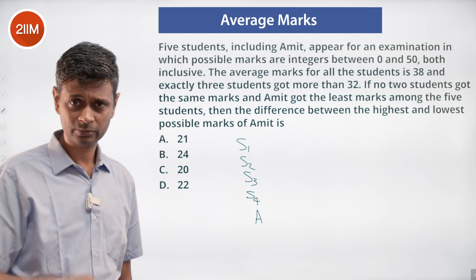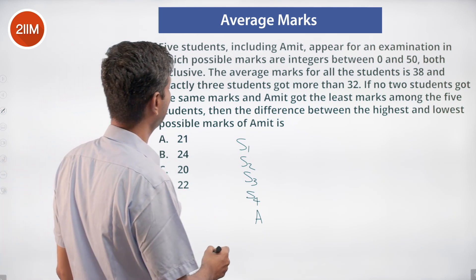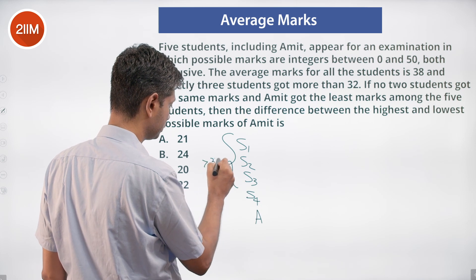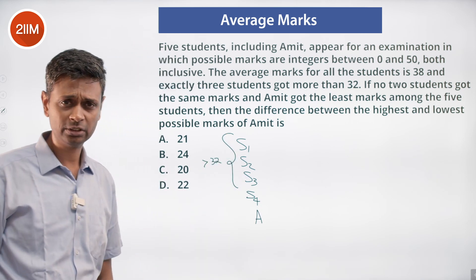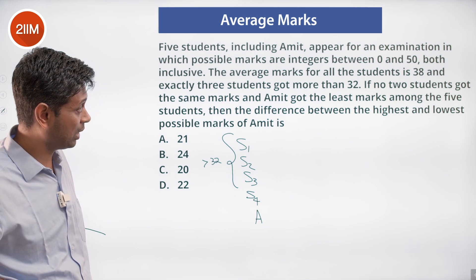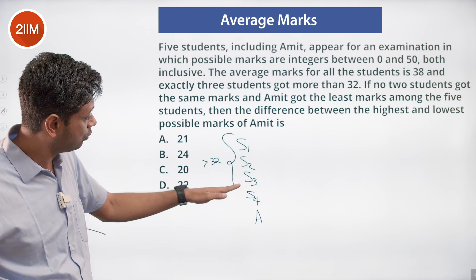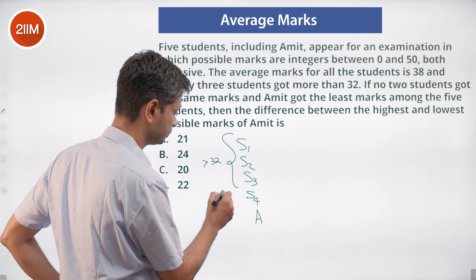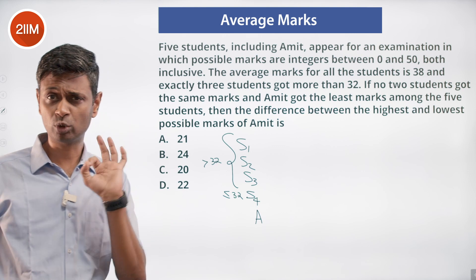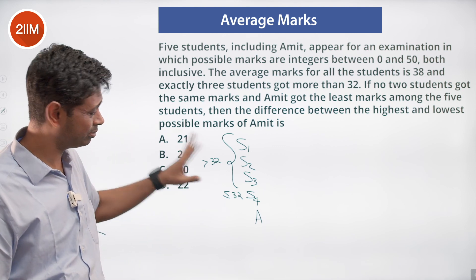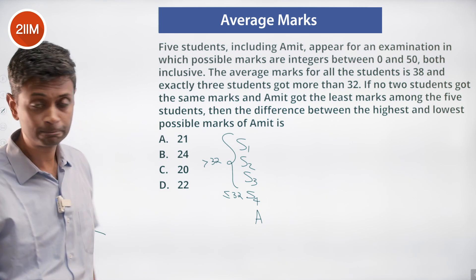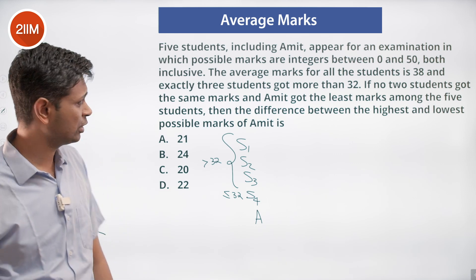Let the students be s1, s2, s3, s4, and Amit, where Amit got the least marks. Exactly three students got more than 32 — those are s1, s2, s3. Since Amit is the least, s4 must be less than or equal to 32. It could still equal 32. That's the situation we have. The average is 38.